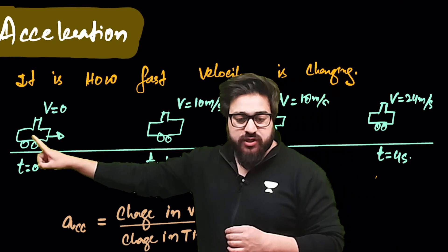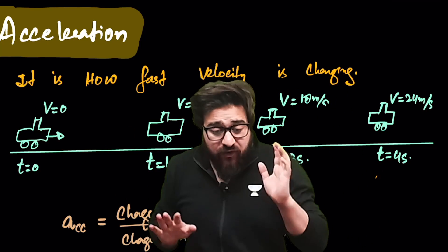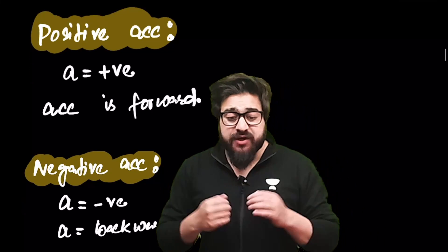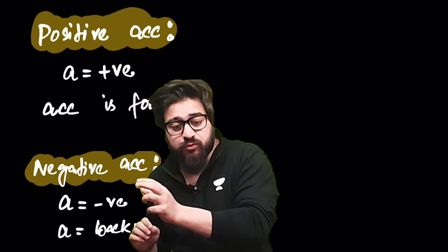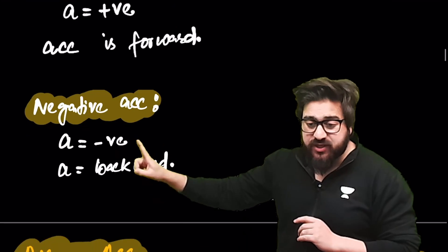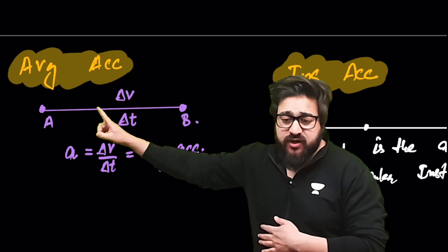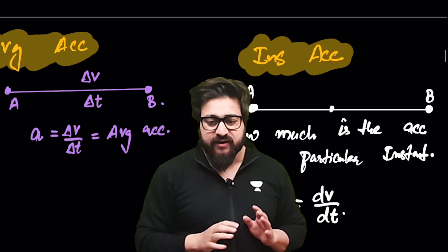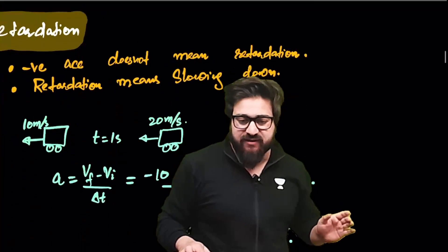Acceleration means how fast your velocity is changing. For example, if velocity goes from 0 to 10 m/s to 18 m/s, the car is accelerating. Acceleration is change in velocity divided by change in time: Δv / Δt. Positive acceleration means the direction of acceleration is forward. If velocity is positive, the car is moving forward. Negative acceleration means the direction of acceleration is backward. Average acceleration is Δv/Δt and instantaneous acceleration is dv/dt.